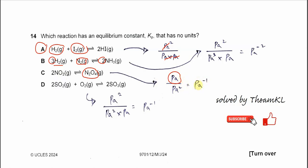For the last one, it's also the same—you get per Pascal because it's Pascal squared over Pascal squared times Pascal. This cancels out, so you get per Pascal here.